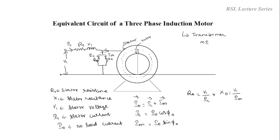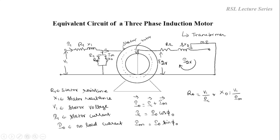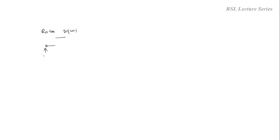Similarly on the rotor side, we can draw the rotor resistance R2 and the rotor reactance, represented as S times X2 under running condition. These are the per-phase values. E2R is the EMF induced in the rotor under running condition, and I2R is the current flowing through the rotor under running condition. These are all the components on the rotor side. We will now draw the rotor equivalent circuit separately. E2R is the EMF induced during running condition, R2 is the rotor resistance per phase, and SX2 is the rotor reactance under running condition, which is a variable. I2R is the current flowing through the rotor.